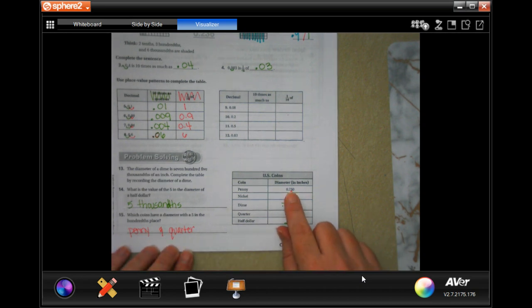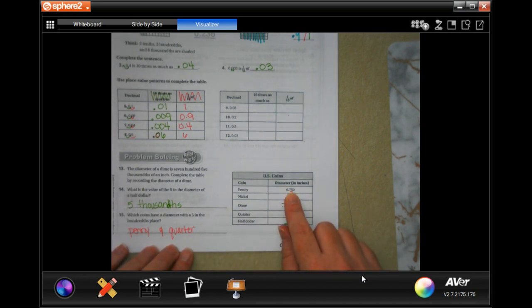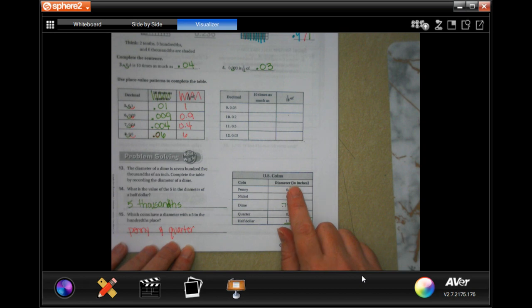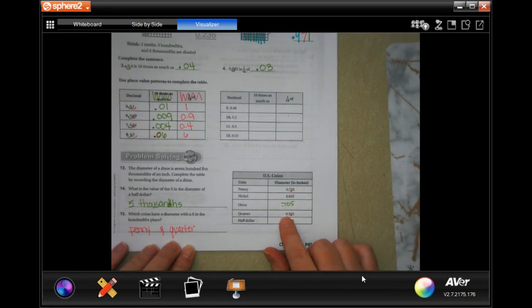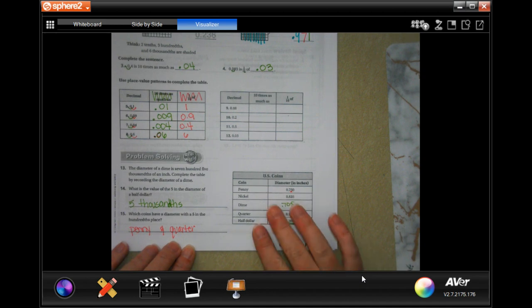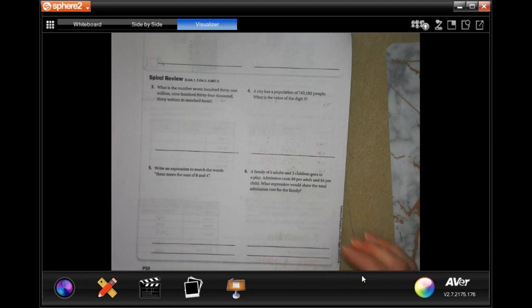In the hundredth place - it's the second place after the decimal. That means that 0.75 and 0.955 the five is in the hundredth. Go ahead and write those down, times it, do whatever you need to do, then do lesson check, then we're going to go ahead and do spiral review together.